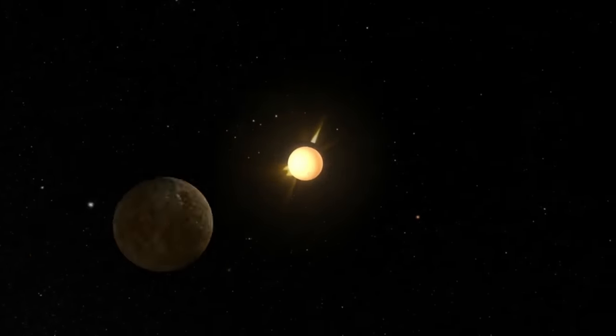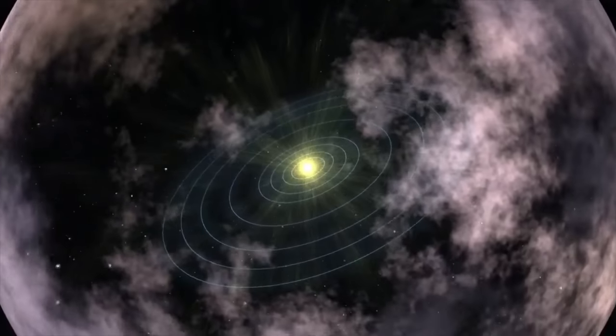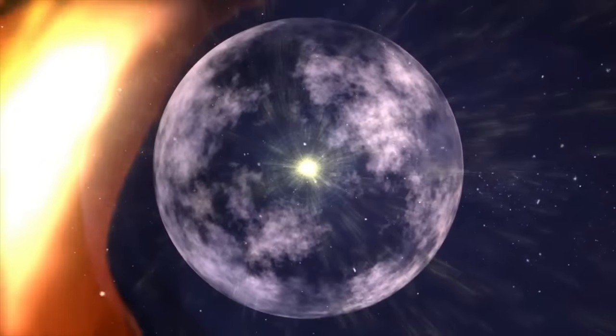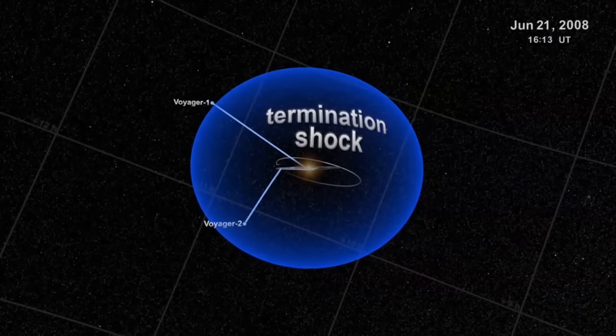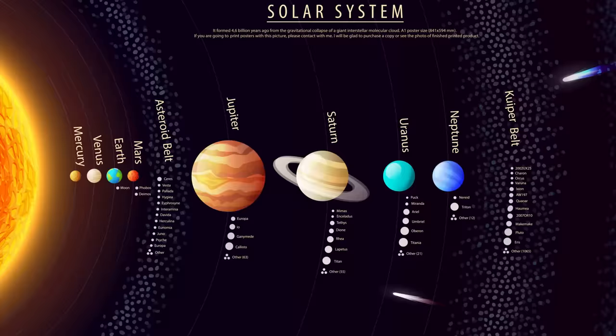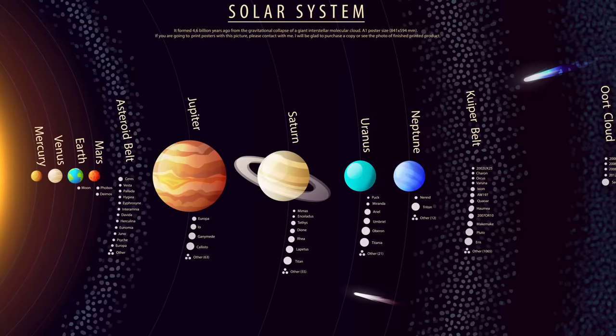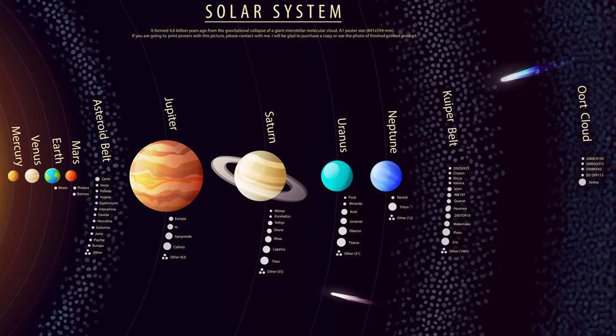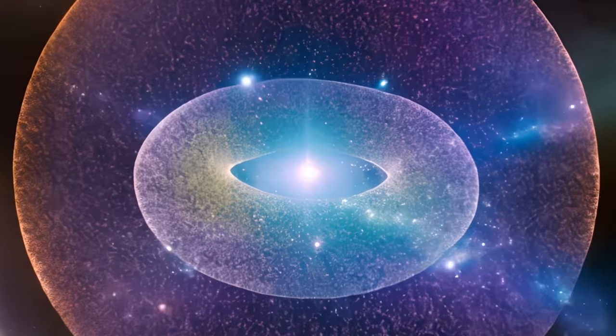Scientists determine the boundary of interstellar space, known as the heliopause, where the Sun's solar wind is stopped by the interstellar medium. This is where the influence of our Sun ceases and the vast realm of interstellar space begins. The Oort cloud represents the final frontier of our solar system, a boundary zone where the Sun's influence wanes and the cosmic journey into the galaxy truly begins.